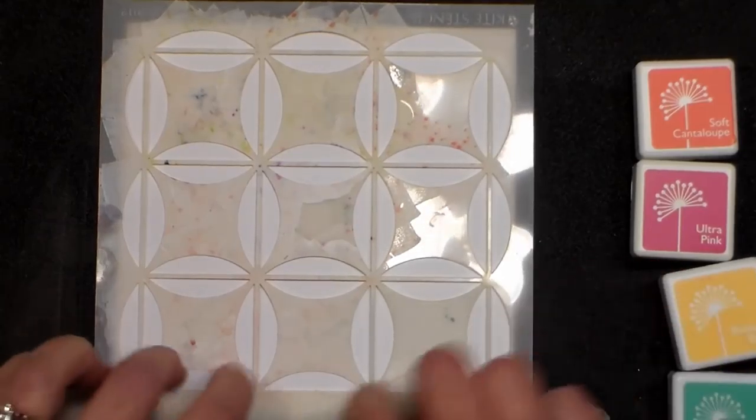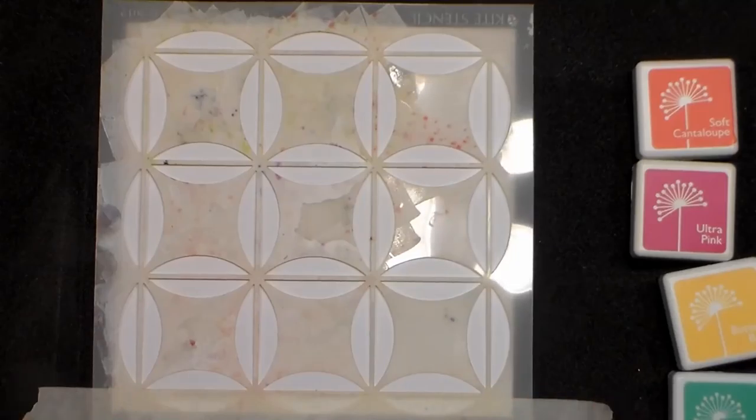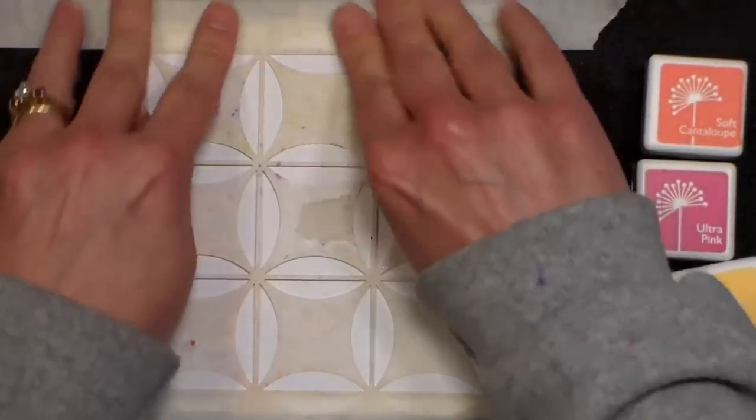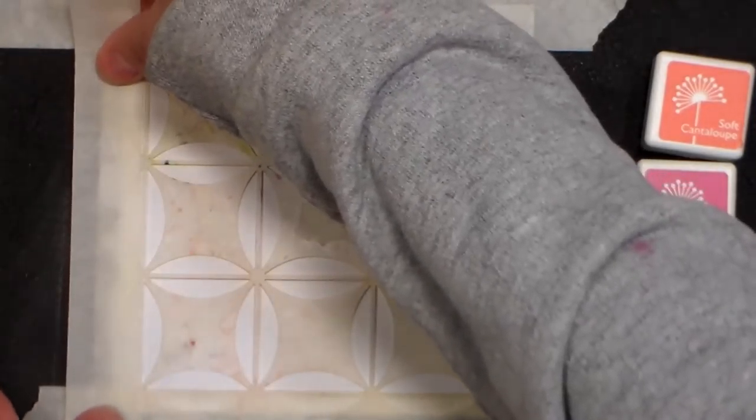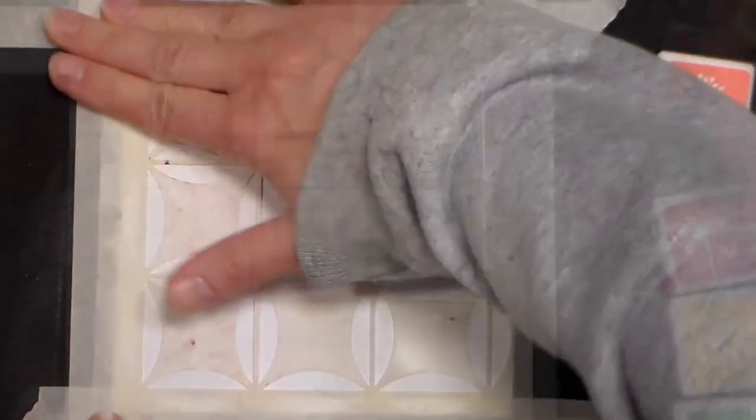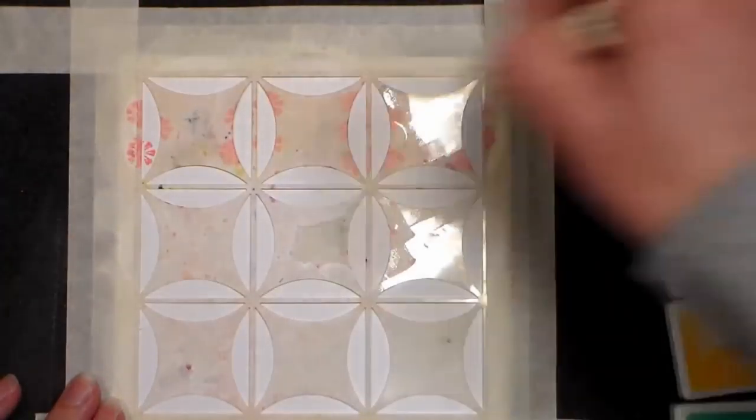I'm going to tape this down with some masking tape. Because I like to buy the cheap masking tape from the dollar store, what I do is stick it to my sweater first. The lint on your clothing will pick it up and make your tape less sticky so it won't rip your paper.